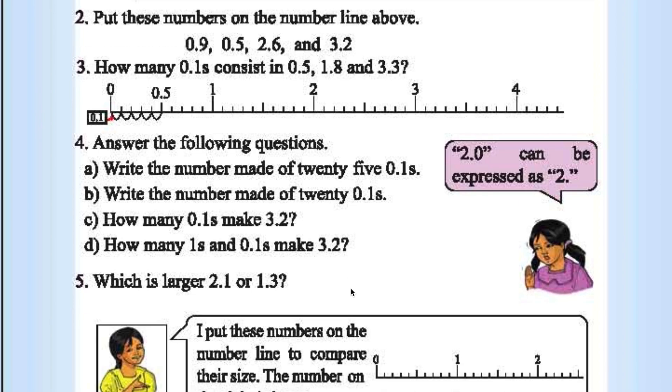Answer the following questions. Write the number made of 25 0.1's. 2.5. Write the number made of 20 0.1's. 2. How many 0.1's make 3.2? 32. How many 1's and 0.1's make 3.2? 3 1's and 2 0.1's.